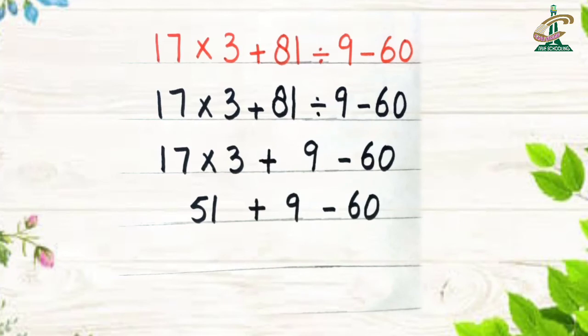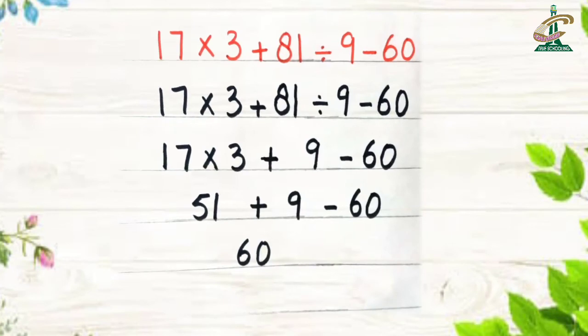What we will do now? Yes. We will add. Which numbers? 51 and 9. 51 plus 9 equal to 60. And write down remaining value as it is.